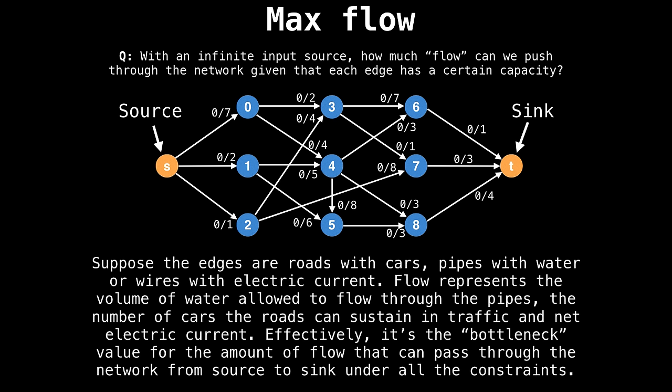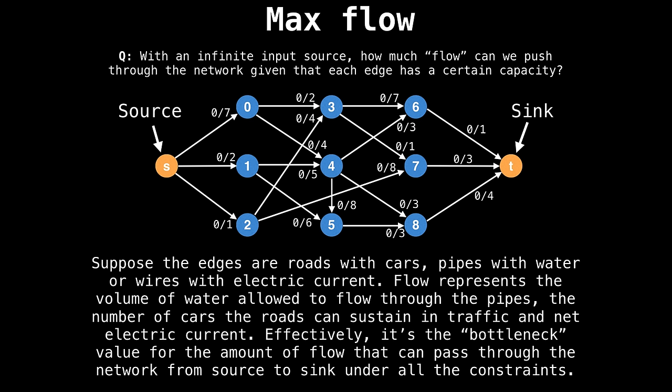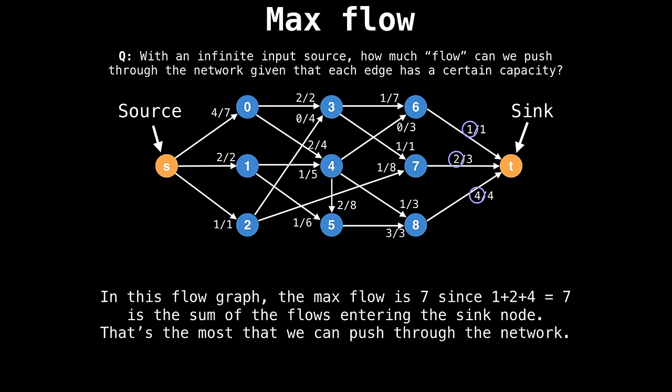Maximum flow can be used in numerous situations where edges and nodes can represent any number of things. For instance, suppose the edges are roads, cars or pipes with water, wires with electric current, and so on. Each of those has a certain capacity value we can associate with. The maximum flow on the other hand would represent the volume of water that can flow through the pipes or the number of cars the roads can sustain in traffic or the net electric current that your system can sustain. Effectively the maximum flow is a bottleneck value for the amount of traffic your network can handle. And that is going from the source to the sink under all those constraints.